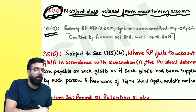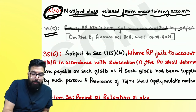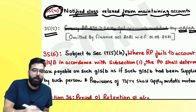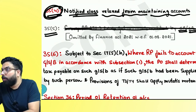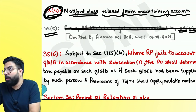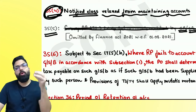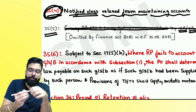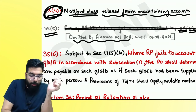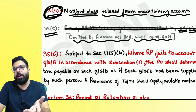Section 35.5 said that if you are a registered person with aggregate turnover more than 2 crore, you had to get your accounts audited by a Chartered Accountant or Cost Accountant. But this provision was omitted by the Finance Act 2021, with effect from 1st August 2021. You are no more required to get your accounts audited under GST.